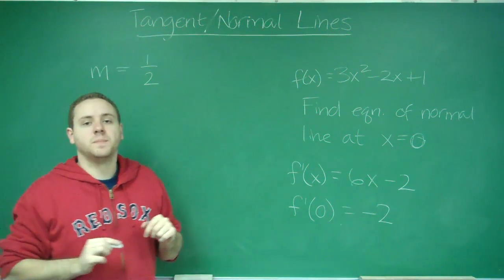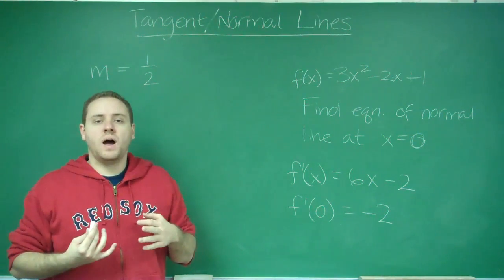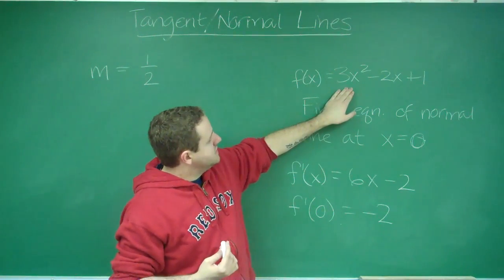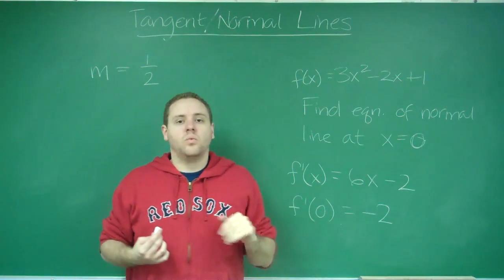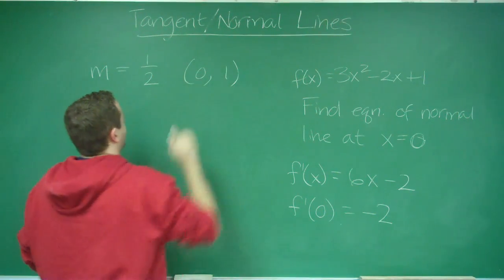Now we have our slope. If we wanted to find an equation, we just need a slope and a point. Well, we know that x = 0 was the x. All we need is the y, and to get the y you just plug that right back into your function. You can see here, if we plugged in 0, we would get 1. So we have m = 1/2, and our point is at (0, 1).